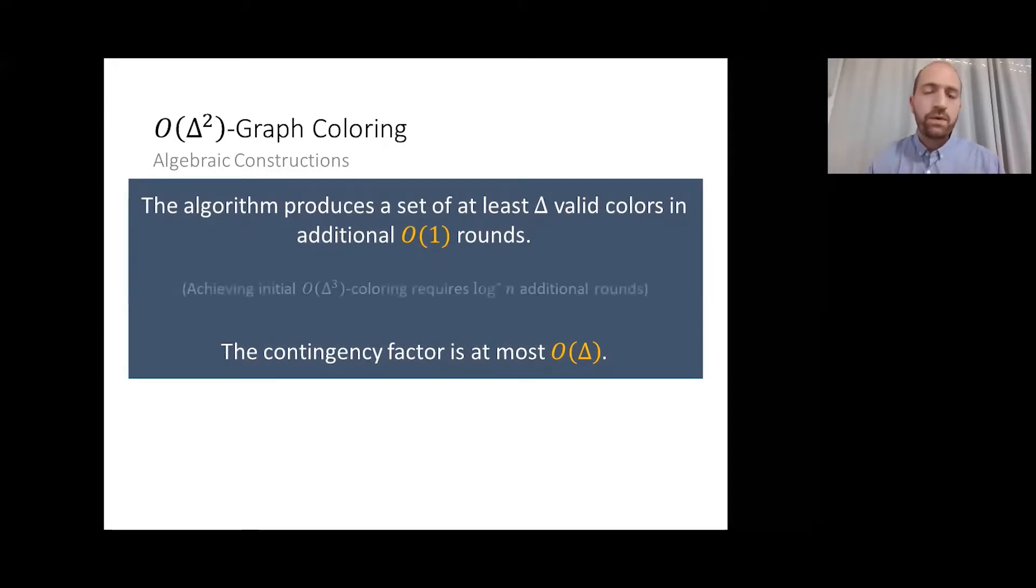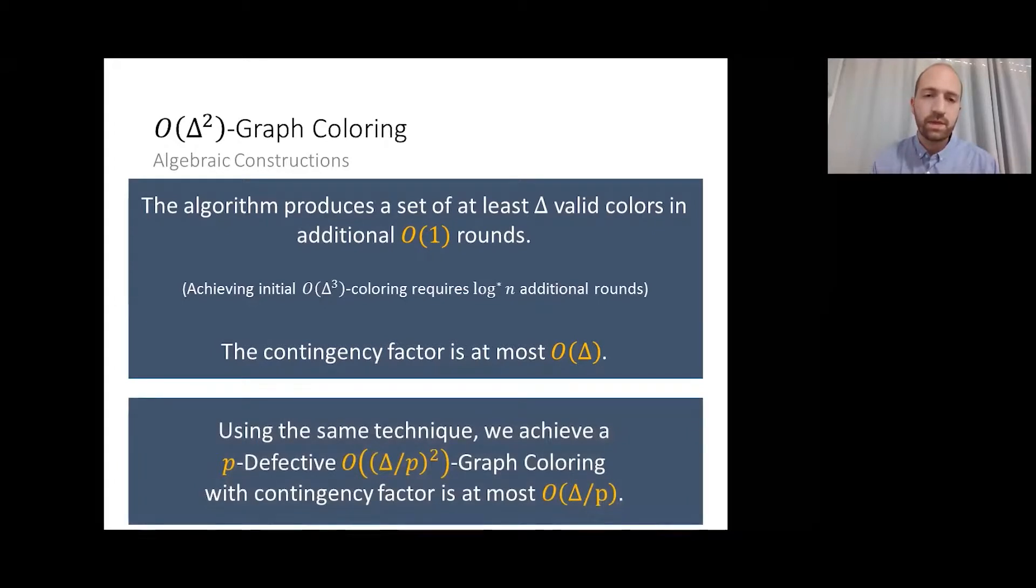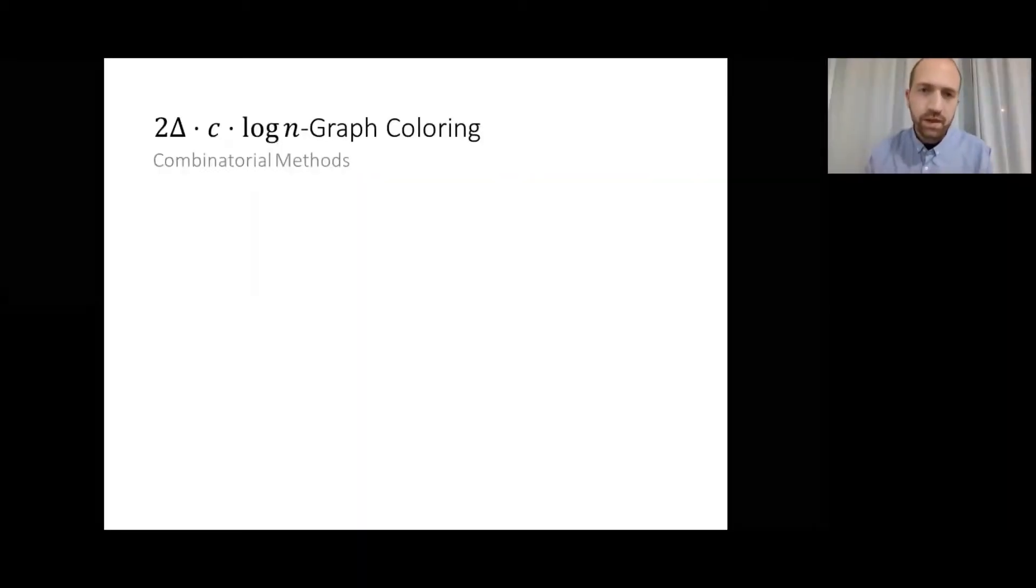Of course, getting the initial delta cubed graph coloring will take some effort which is explained in the paper. We show in the paper how to get a bit-effective graph coloring using just the same technique. Another technique is to use combinatorial methods, meaning that each node will randomly select a large, but not too large, number of labels. By doing so, we can prove with high probability that there will be enough distinct labels that are not contained in the label set of the neighbors.